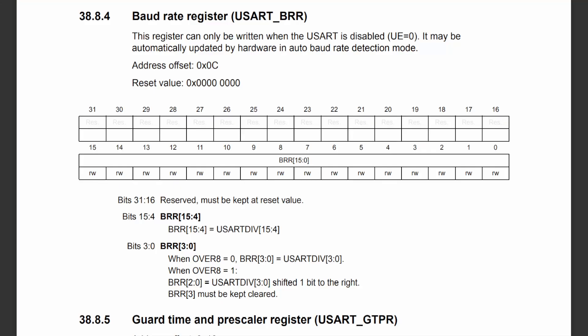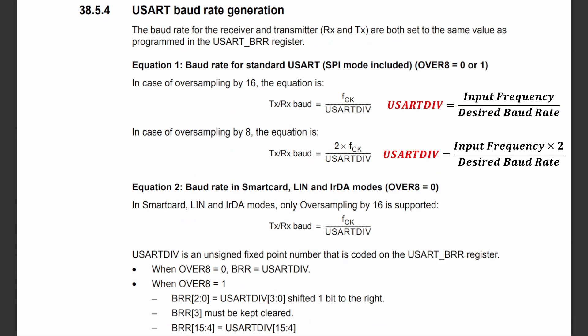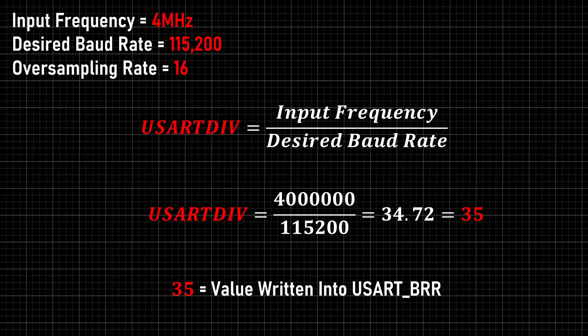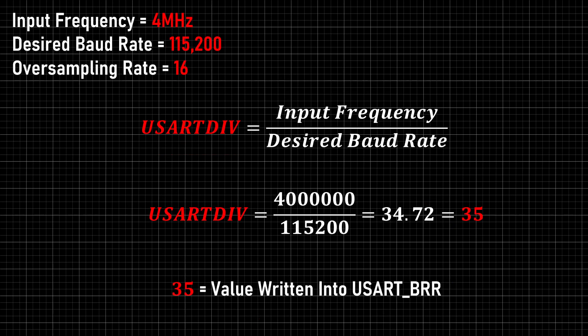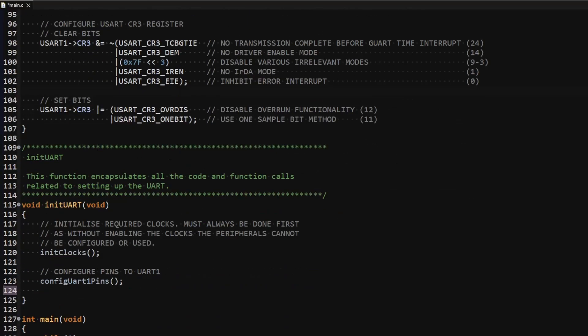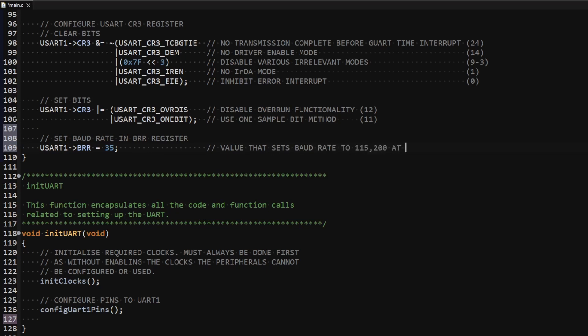The last register to configure is the baud rate register. The value written to achieve the desired baud rate is calculated by dividing the UART's input clock by the desired baud rate when oversampling by 16. When oversampling by 8, the frequency is multiplied by 2, and bits 3 to 0 of the calculated value are shifted right by 1. For my case: 4 MHz divided by 115,200 gives a value of 35. For oversampling by 8 it would be 4 MHz times 2 divided by 115,200, then shifting bits 3 to 0 right by 1, giving 66. Since I'm oversampling by 16 I write the value 35 into the baud rate register to set the baud rate to 115,200.